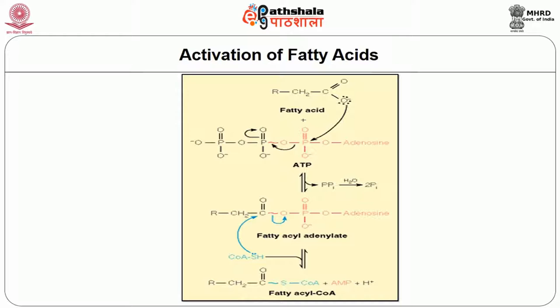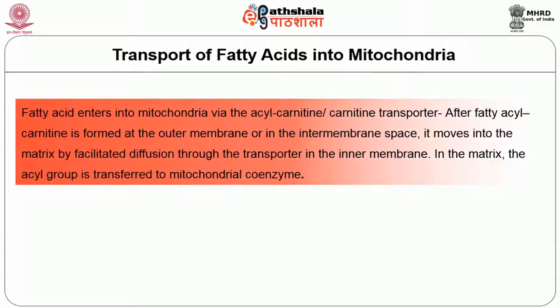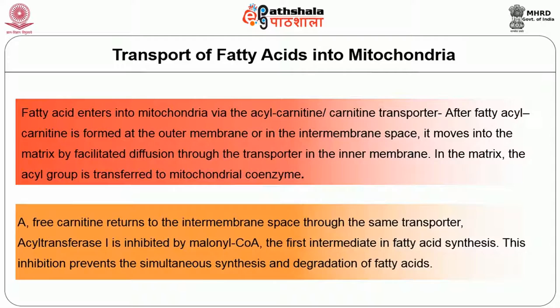Next is the transport of fatty acids into mitochondria. Fatty acids enter the mitochondria as acyl-CoA via the acyl-carnitine or carnitine transporter. Fatty acyl-carnitine is formed at the outer membrane or in the inter-membrane space, then moves into the matrix by facilitated diffusion through the transporter in the inner membrane. In the matrix, the acyl group is transferred to mitochondrial coenzyme A. Free carnitine returns to the inter-membrane space through the same transporter. Acyl transferase-1 is inhibited by malonyl-CoA, the first intermediate in fatty acid synthesis. This inhibition prevents the simultaneous synthesis and degradation of fatty acids.